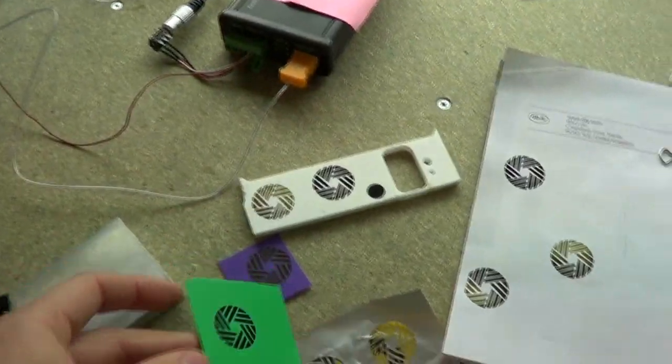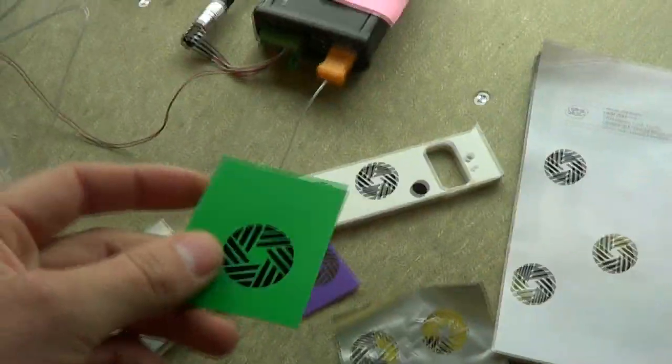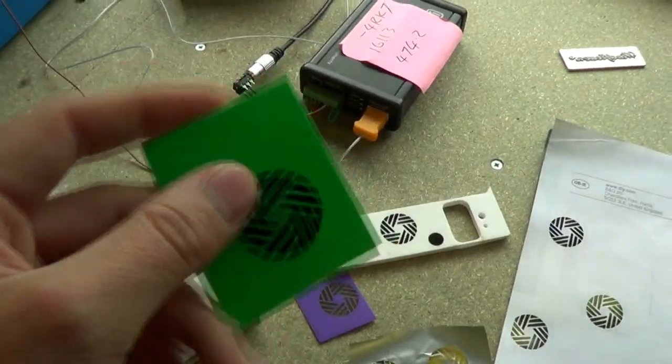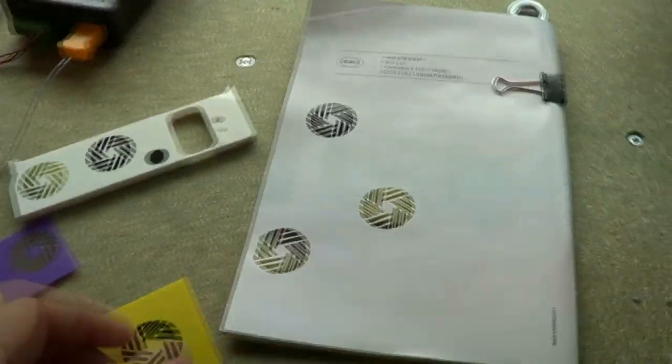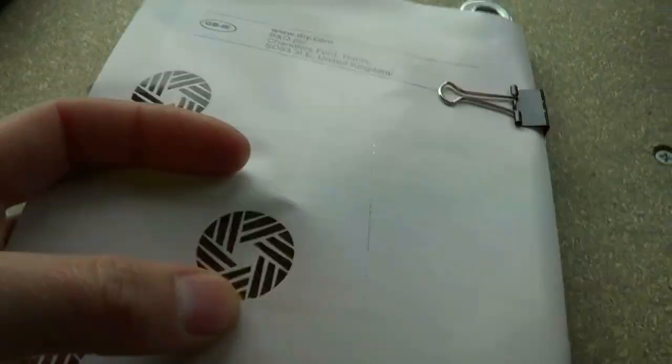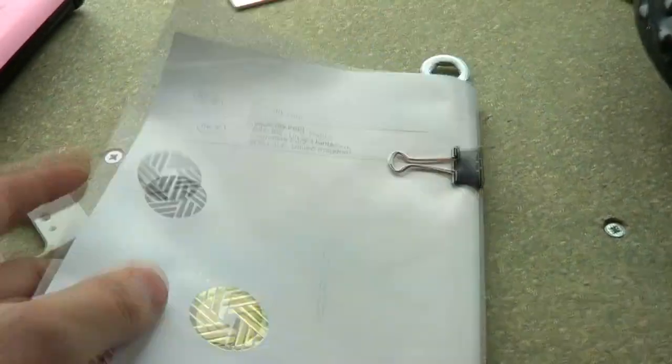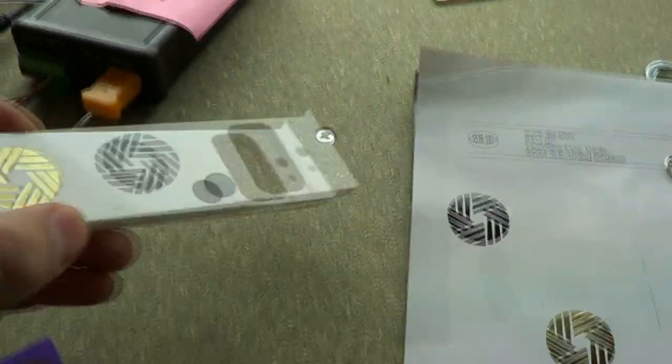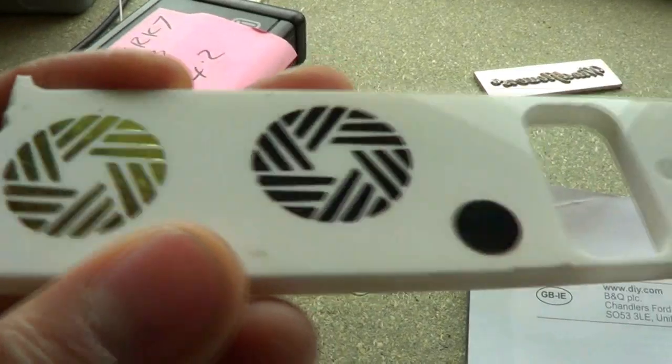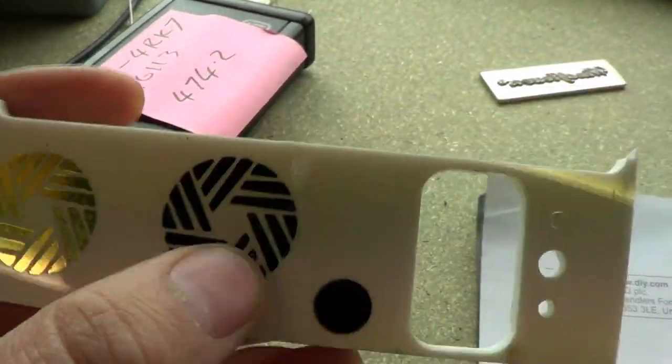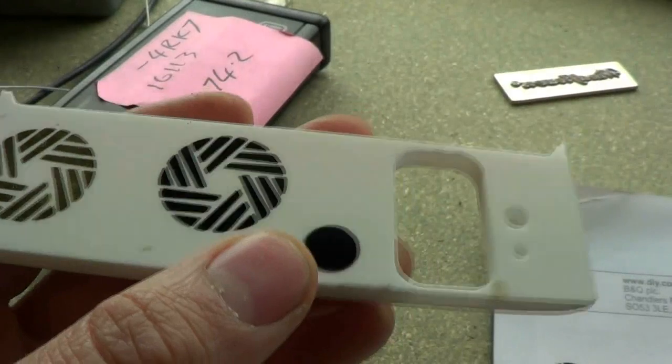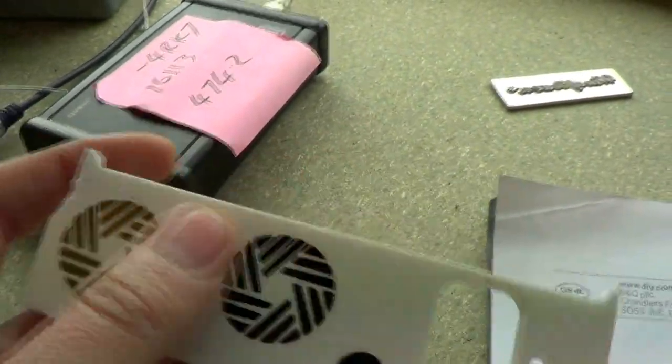So this will work on many different substrates. My main aim was polypropylene because that's what we're working on at the moment. But I've been practicing on this, just glossy paper, back of a booklet. And it will even go on to hard acrylic. This is quite tricky because the die needs to be perfectly parallel to the surface.